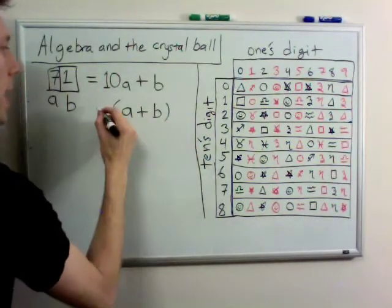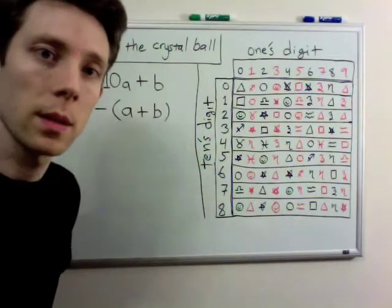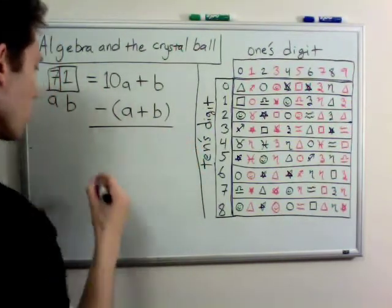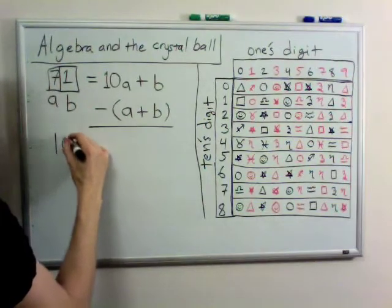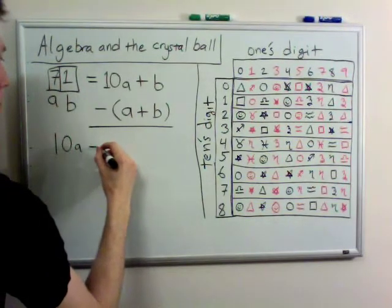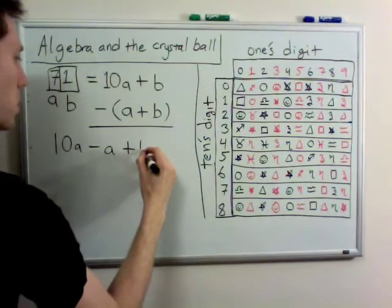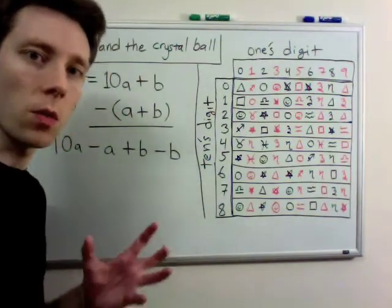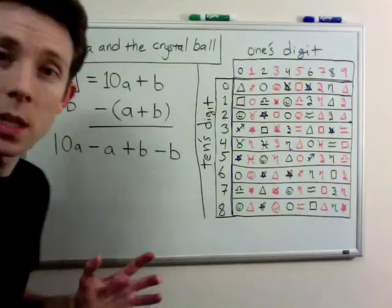And the instruction said to subtract a plus b. So, when I subtract a plus b, I'm going to get 10a minus a plus b minus b. What I've done is I've just rewritten all four terms in a slightly different order.